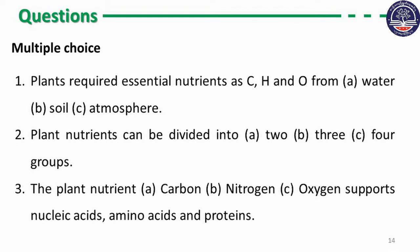Plants require essential nutrients: carbon, hydrogen, oxygen (CHO) from water and atmosphere. The plant nutrients can be divided into 2 to 4 groups. Plant nutrients include carbon, hydrogen, oxygen, nucleic acids, amino acids, and proteins.